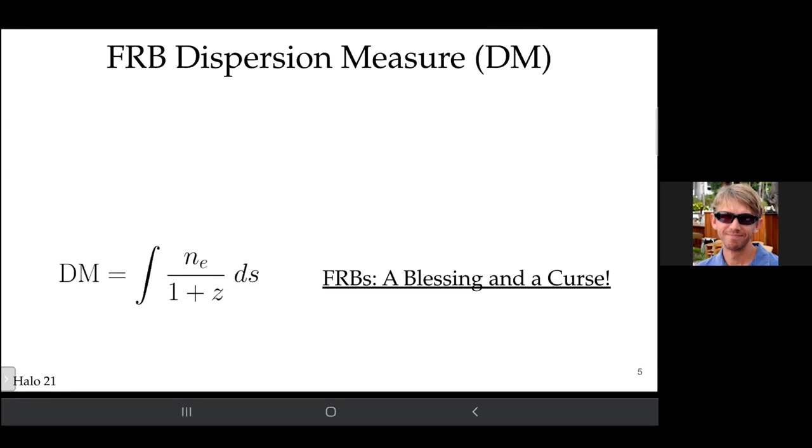Dispersion measure - I like to call it a blessing and a curse. It's a blessing because you're sensitive to all the electrons along the path line. That's something that techniques many of us have employed with quasar absorption line spectroscopy. With quasar spectroscopy, we're typically sensitive to one phase of density and temperature. With dispersion measure, you're sensitive to all the electrons.